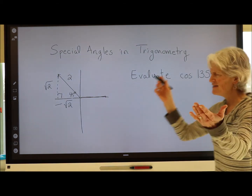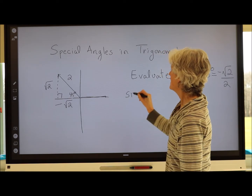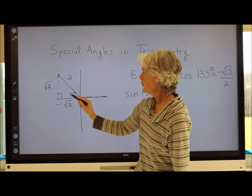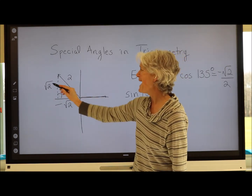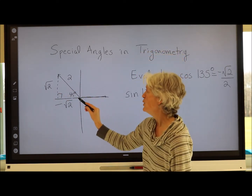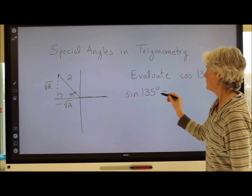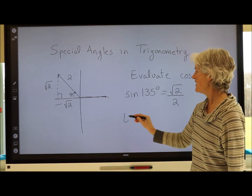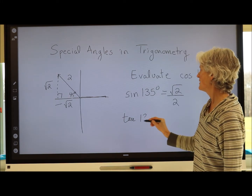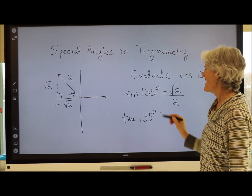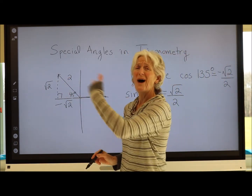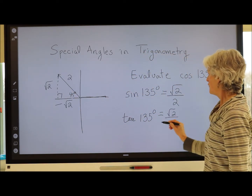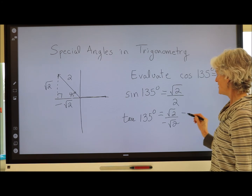So cos(135°) = adjacent/hypotenuse = x/rotating arm = −√2/2. The sine of 135° uses the same reference triangle: sine is opposite/hypotenuse, or the y-value over the rotating arm = √2/2. The tan of 135° is opposite/adjacent, or y/x = √2/(−√2) = −1.